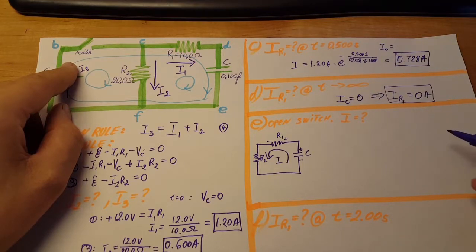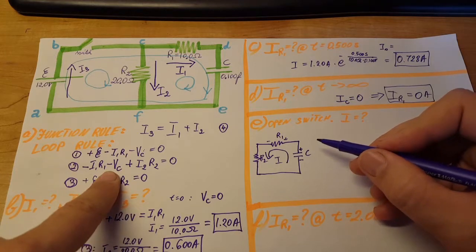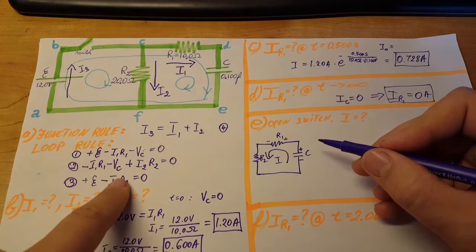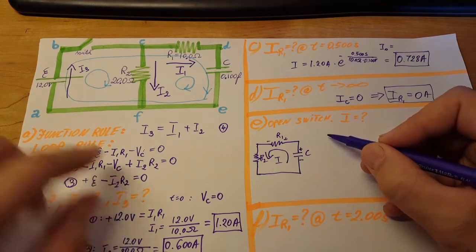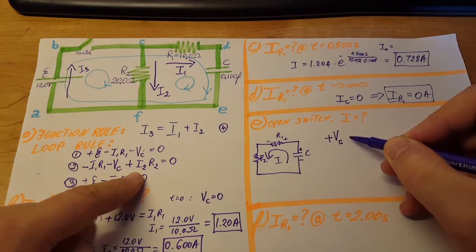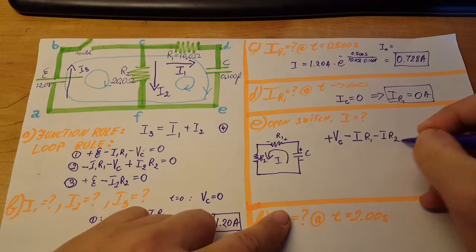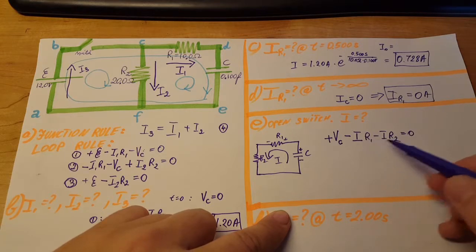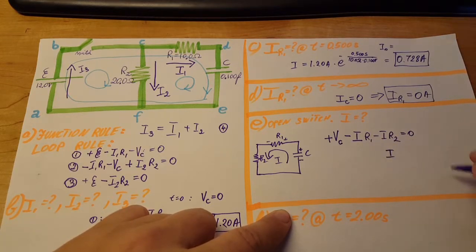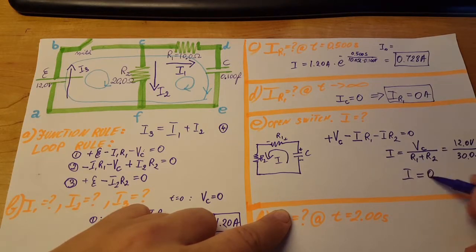We write a new loop rule. When the capacitor was charging we wrote minus Vc, but now it's acting as a battery and discharging, so we write plus Vc. The rest of the loop gives minus i R1 minus i R2 equals zero. Both resistors carry the same current i. Solving: i equals Vc divided by R1 plus R2, which is 12.0 volts divided by 30 ohms, giving i equals 0.400 amps.